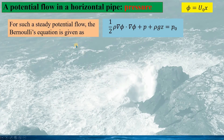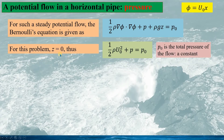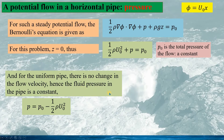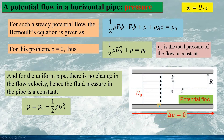Now we apply Bernoulli's equation to the potential flow in the horizontal pipe. For a steady potential flow, the Bernoulli's equation is given as this. For this problem, the pipe is horizontal so z is constant and we can take z as 0, giving a modified Bernoulli's equation. Here p0 is the total pressure of the flow and it is a constant. Since the flow in the pipe is uniform with no change in flow velocity, the fluid pressure in the pipe is constant: p equals p0 minus this term. Therefore, the pressure drop delta p equals 0.